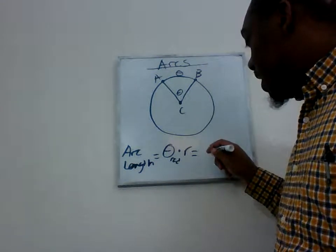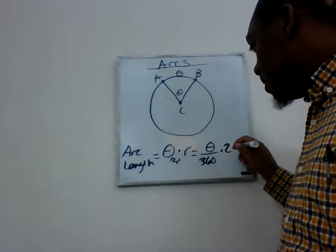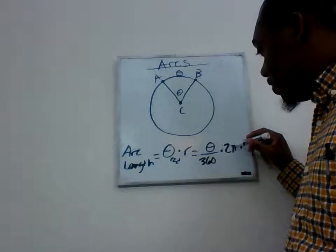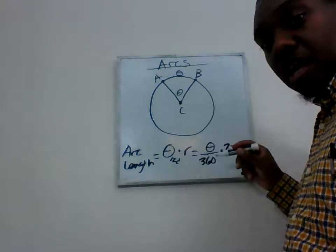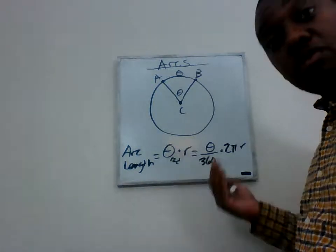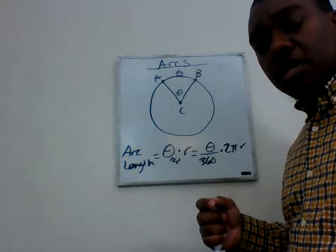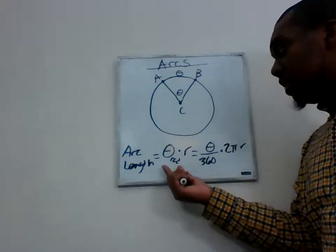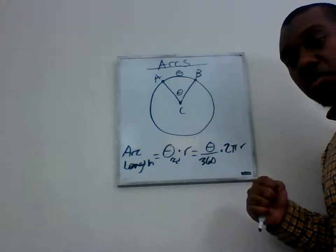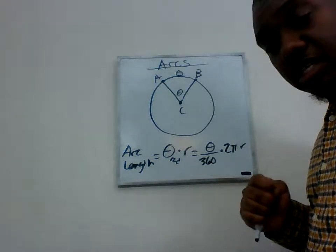Other times people will say: take the angle measurement out of 360 and then multiply it times the circumference. In doing so, what you're really doing is converting degrees to radians. The 2π over 360 simplifies to π over 180, which is exactly what you multiply by to convert degrees to radians. So either way, you need the angle in radians or you need to convert it.